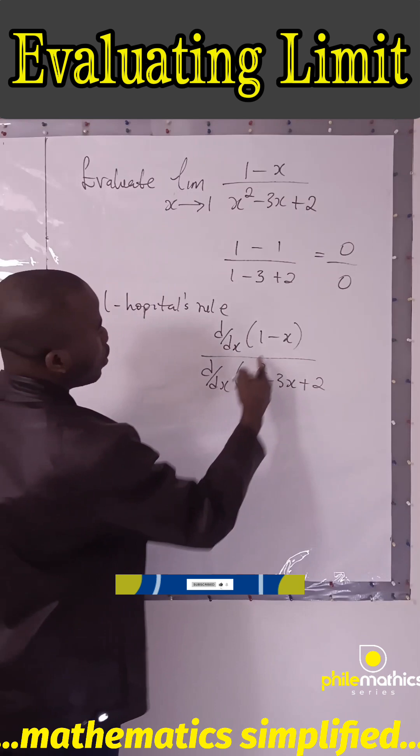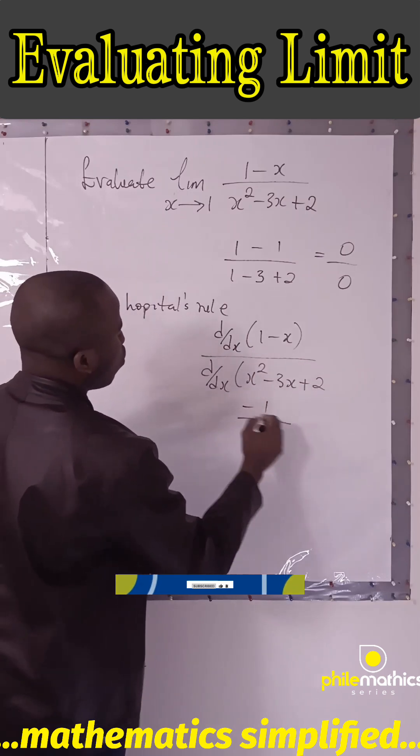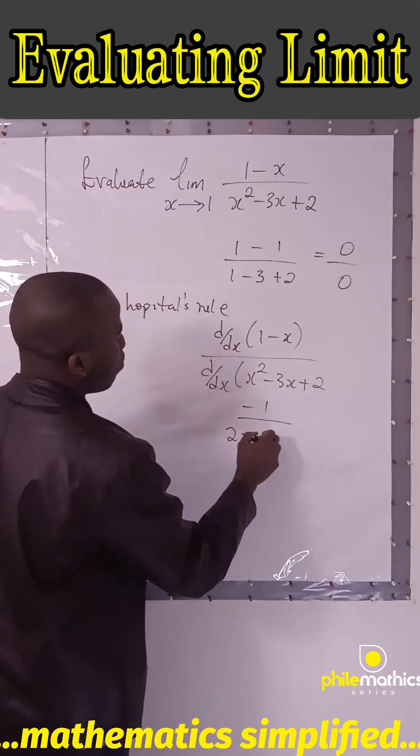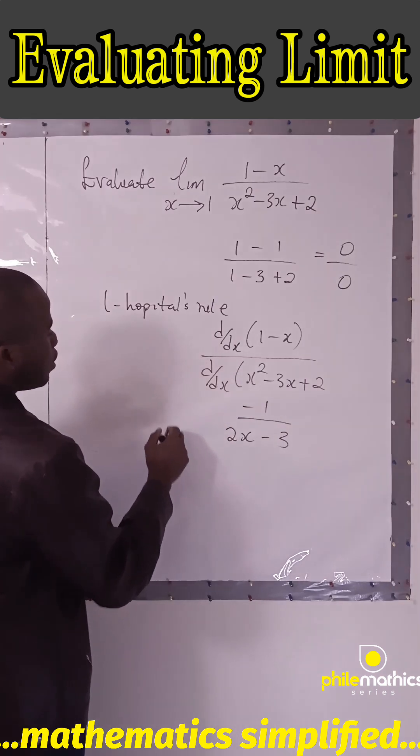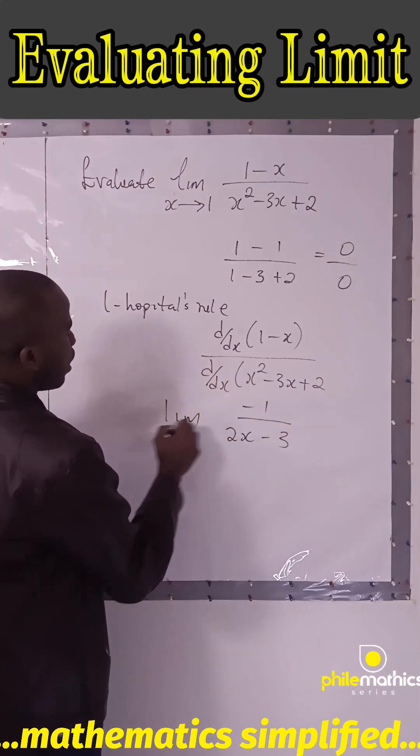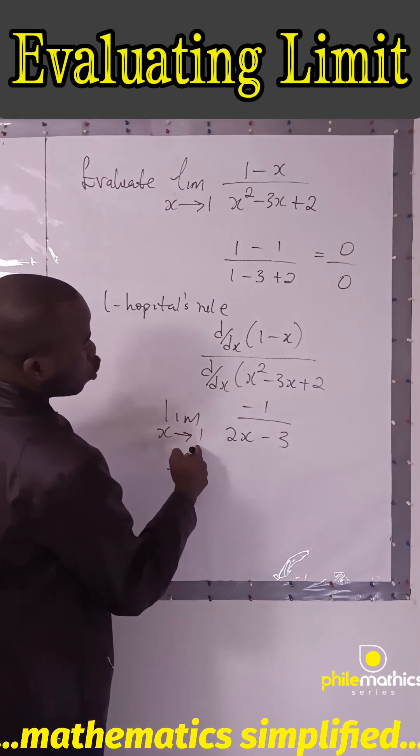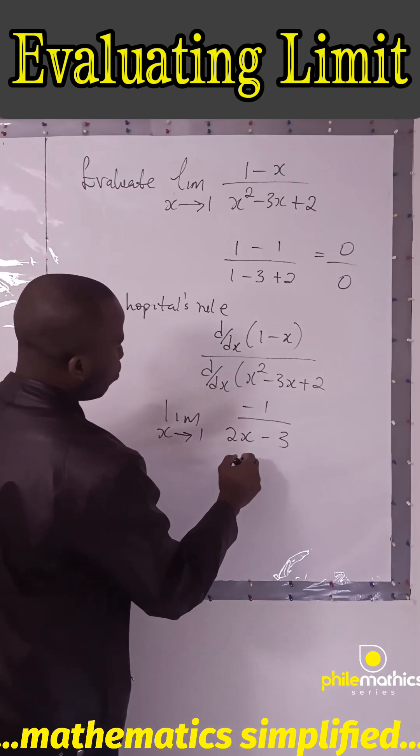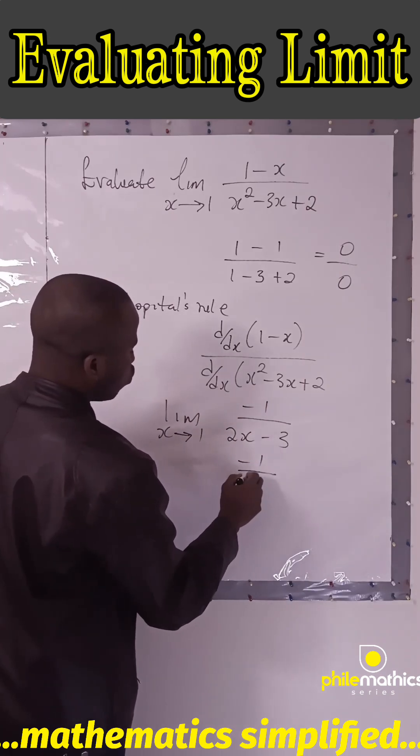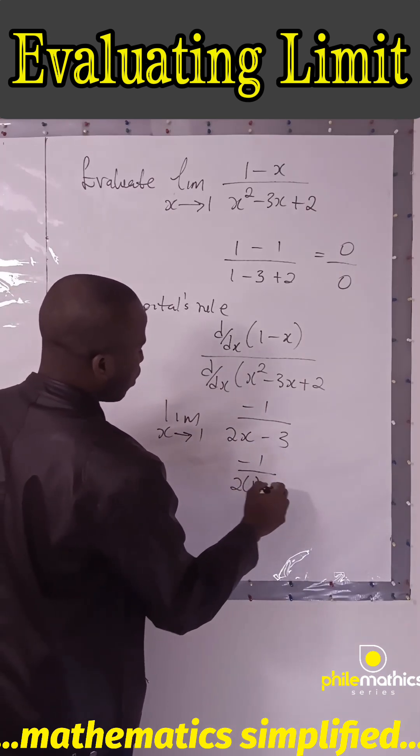This will be minus one over 2x minus 3. We're looking for the limit as x approaches one, so we'll substitute one for this. It will be minus one over two times one minus three.